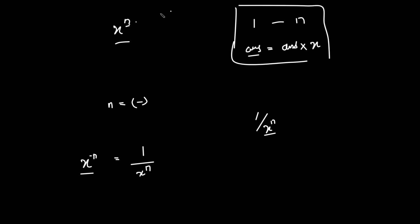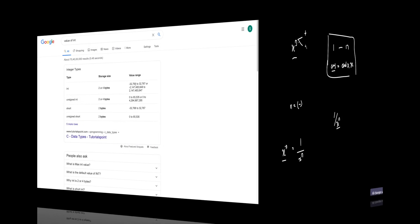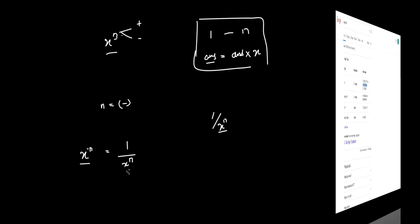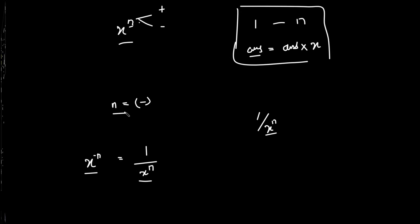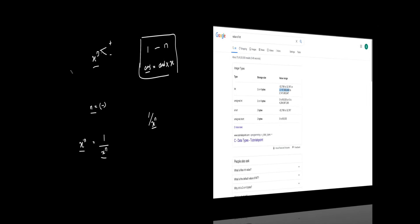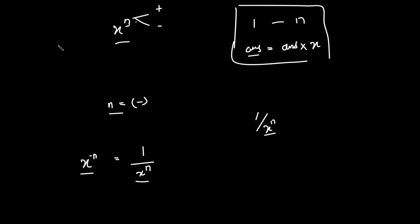There still lies an edge case. The problem states n is an integer, so its range is from -2,147,483,648 to about 2,147,483,647. If n is given as the most negative value and you try to make it positive, it will overflow because the absolute value of that minimum integer cannot be stored in an integer. This is the edge case you need to handle — use a long or long long when converting.